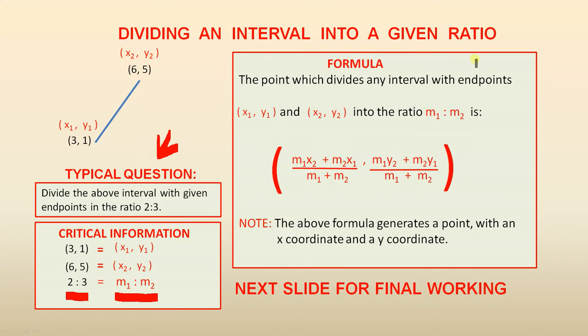Now here is the formula which helps us to answer this question. The point, so remember it's a point, the answer is going to be a point which divides any interval with endpoints (x1, y1), (x2, y2) into the ratio m1 is to m2 is: